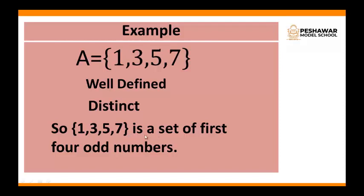From the above discussion, we conclude that A equals to {1, 3, 5, 7} is a set. Why is this a set? Because these numbers are distinct and well-defined. The main thing is that every member of a set should be written inside curly brackets, also known as braces. Another thing is that a set should be denoted by a capital letter.